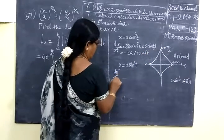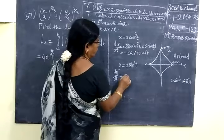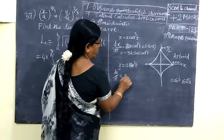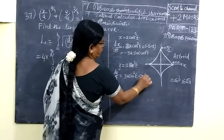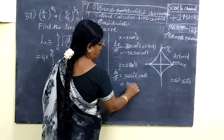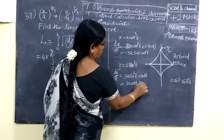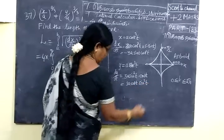Now dy/dt equal to the same way, 3a sin² t into cos t. That is 3a cos t sin² t.